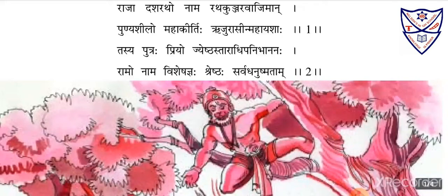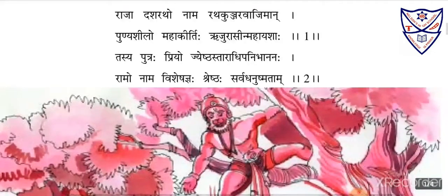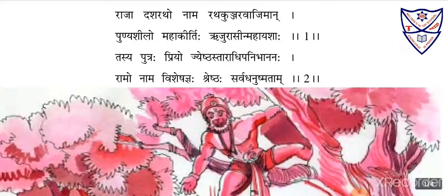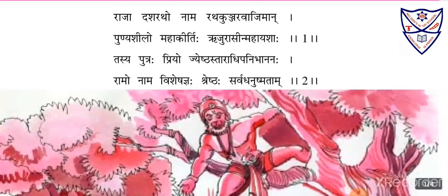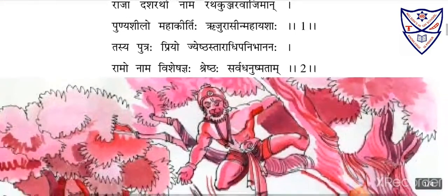The translation is: Raja Dashrat — the king by that name — had chariots, elephants, and horses. He was polite, rich in glory, very famous, very righteous. He was whatever is right — in that only he would believe. Rich in glory and having chariots, elephants, and horses with him. There was a king whose name was Dashrat, who was very famous, straightforward, and very righteous.